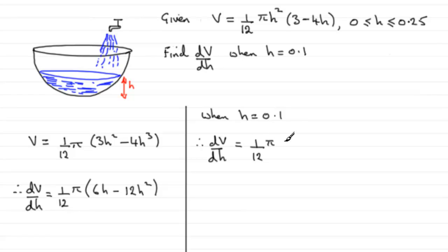Well, 6 times 0.1 is going to be 0.6. And then we subtract 12 times 0.1 squared. So that's going to be 0.12.